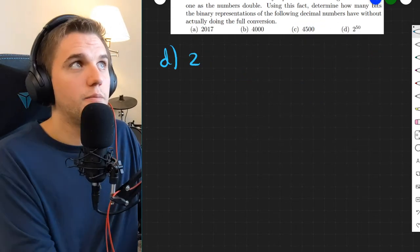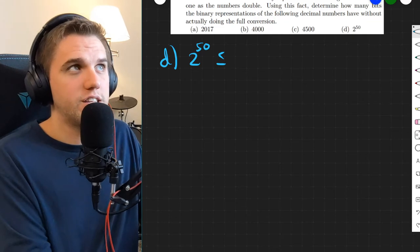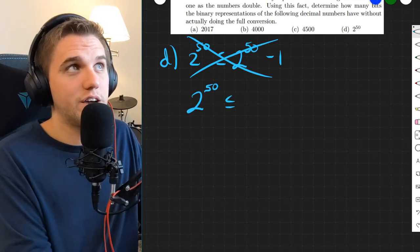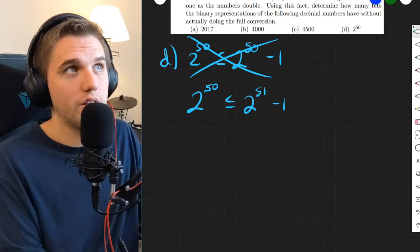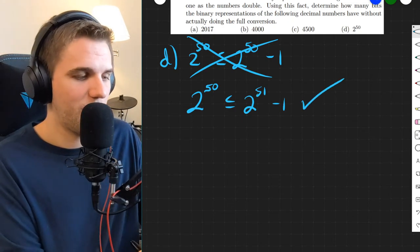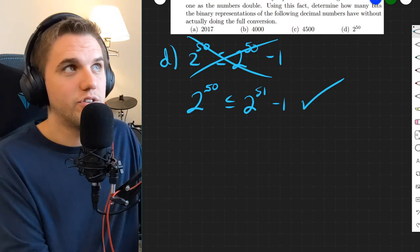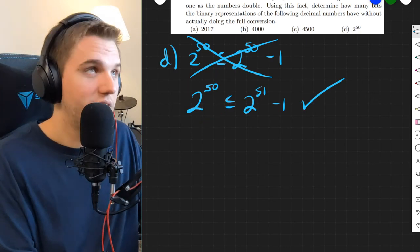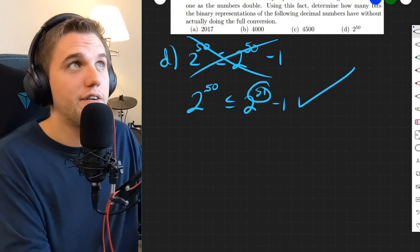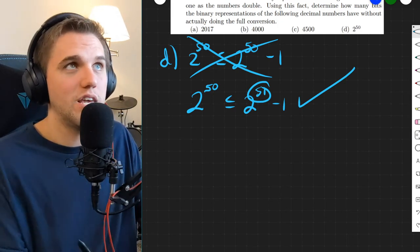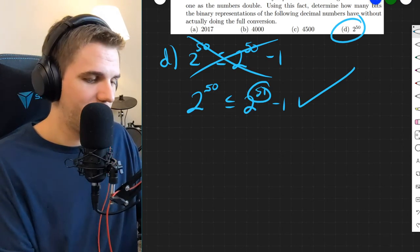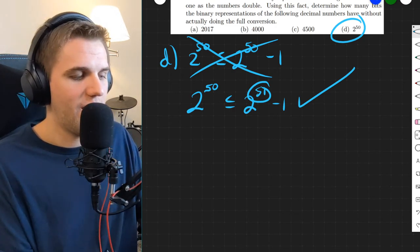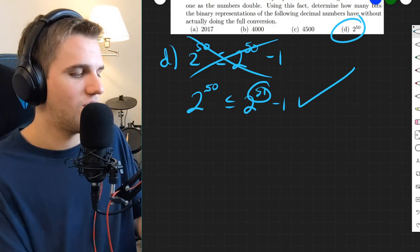Last but not least, part D: two to the 50th power. Is that less than two to the 50th minus one? No. But two to the 50th power is definitely less than or equal to two to the 51st minus one — that works. If you take two to the 50th, multiply by two and subtract one, you get a bigger number. So 51 bits is enough, and 50 bits is not enough. Therefore, 51 bits is the least number of bits needed to represent two to the 50th power.